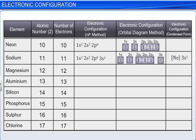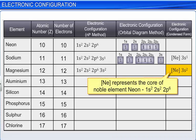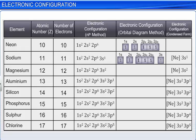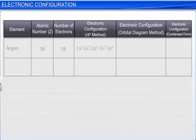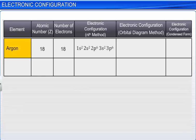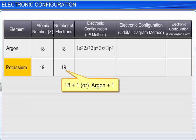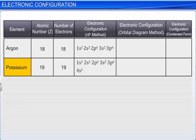Similarly, the electronic configuration of magnesium can be written in condensed form as [Ne] 3s2. Elements with atomic numbers 11 to 17 are written in condensed form in terms of Neon. Argon, whose atomic number is 18, has a completed 3p orbital. Therefore, the electronic configuration of potassium, which has one electron more than Argon, can be written as [Ar] 4s1, where Ar represents the core of the noble element Argon.